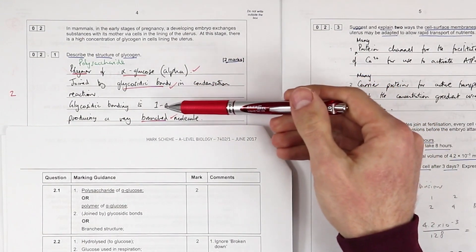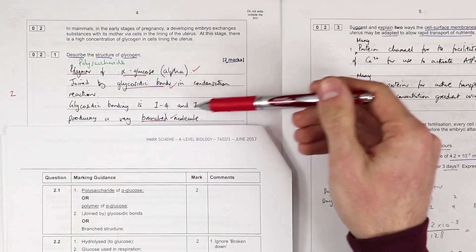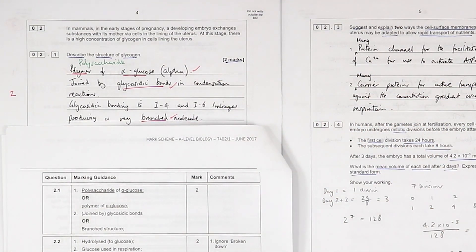I could see that this could be a three mark question potentially—I think branched and glycosidic, to be honest. Linking the 1,4 and 1,6 especially for Edexcel and OCR students, that's going to be more of a thing because they do a bit more emphasis on the linkages.